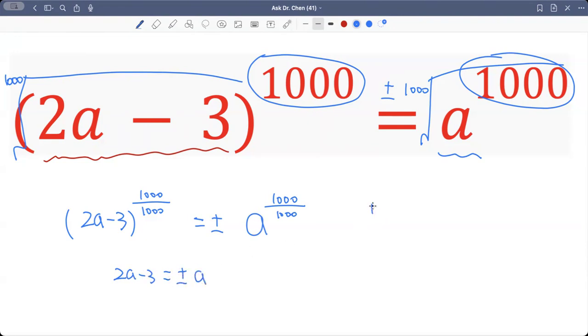So two cases. The first case is 2a minus 3 equals positive a. Solve for a, subtract a on both sides. So 2a minus a equals 3. Basically we move a to the other side, it becomes negative. We move negative 3 to the other side, it becomes positive. 2a minus a is just a, so a equals 3. So first solution.